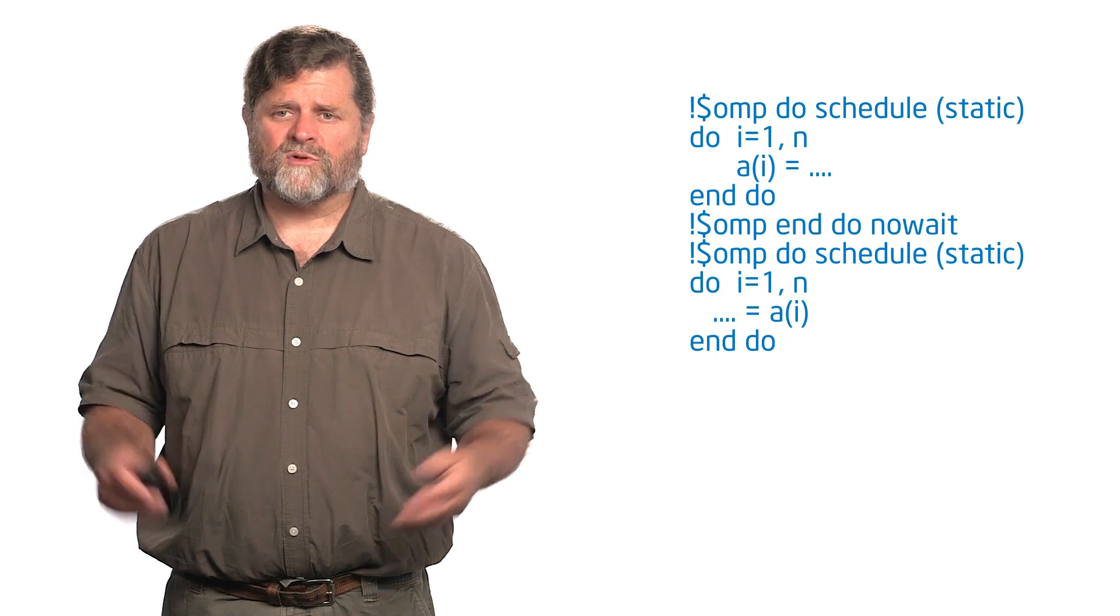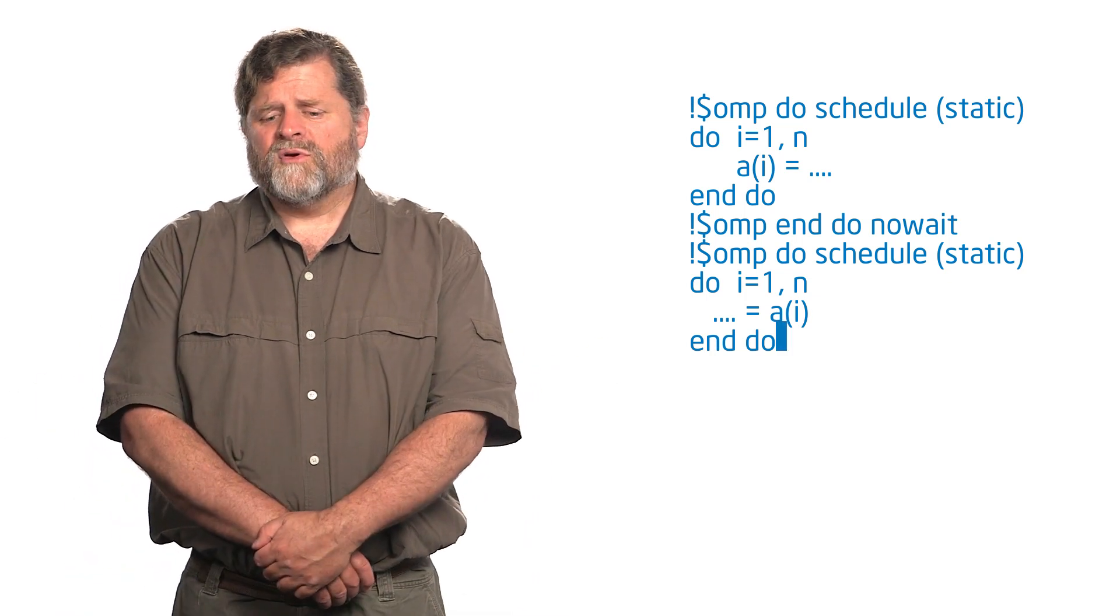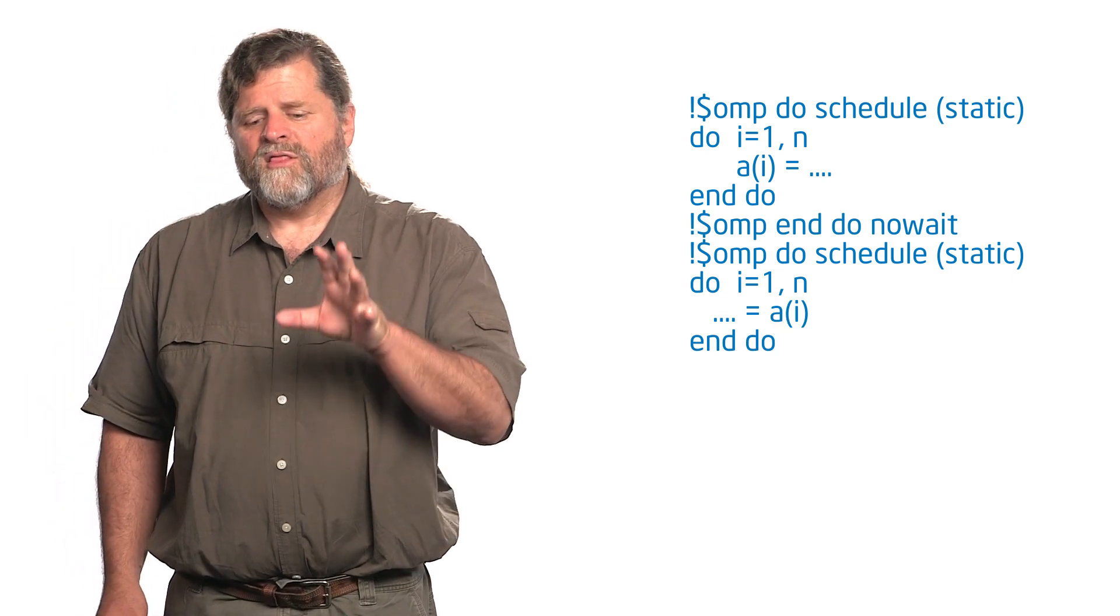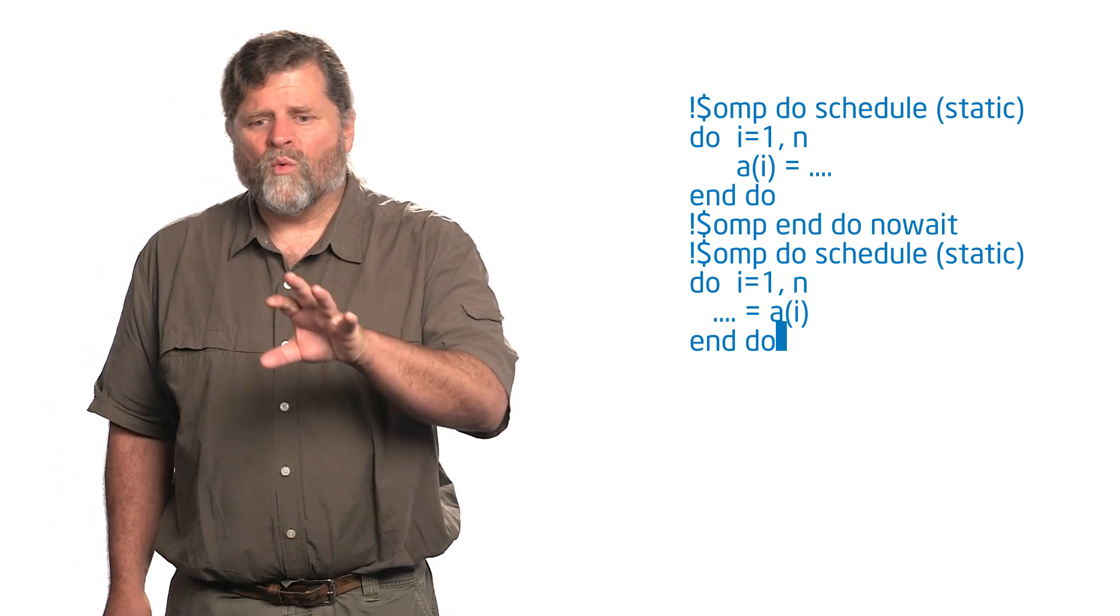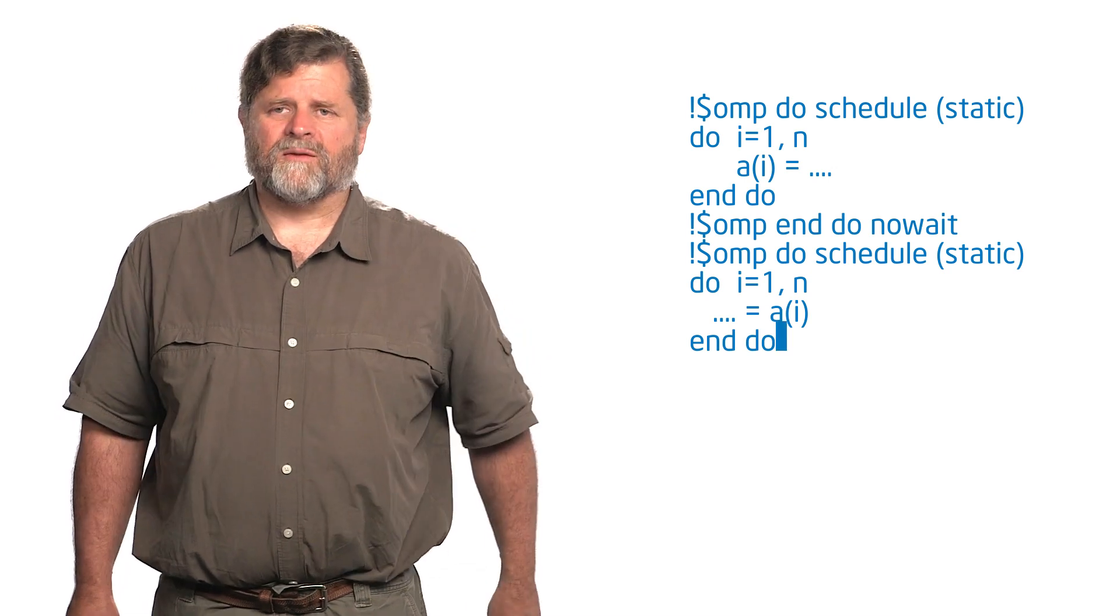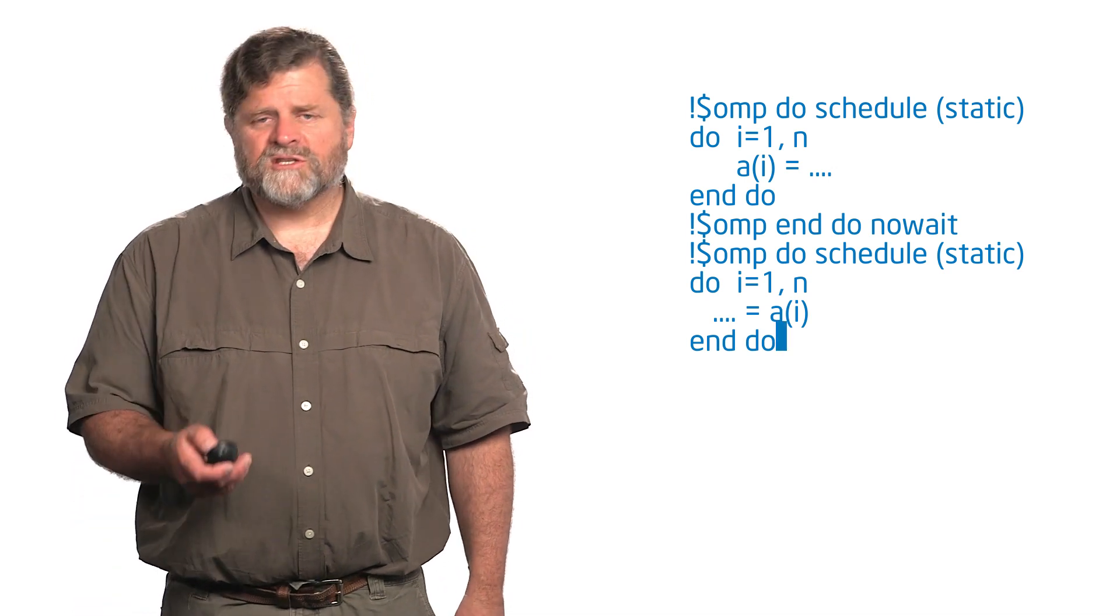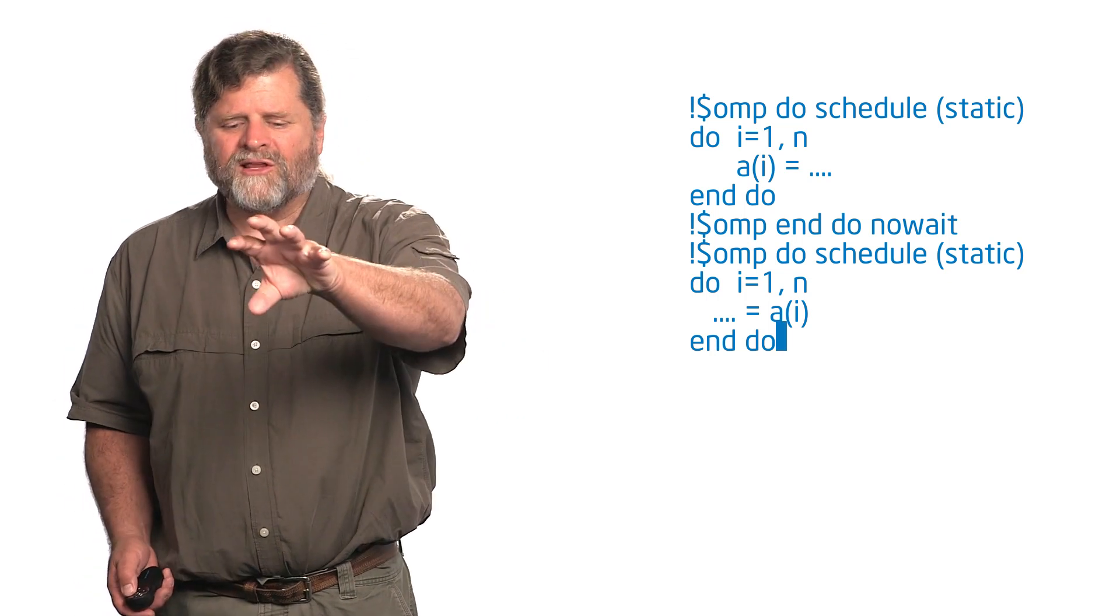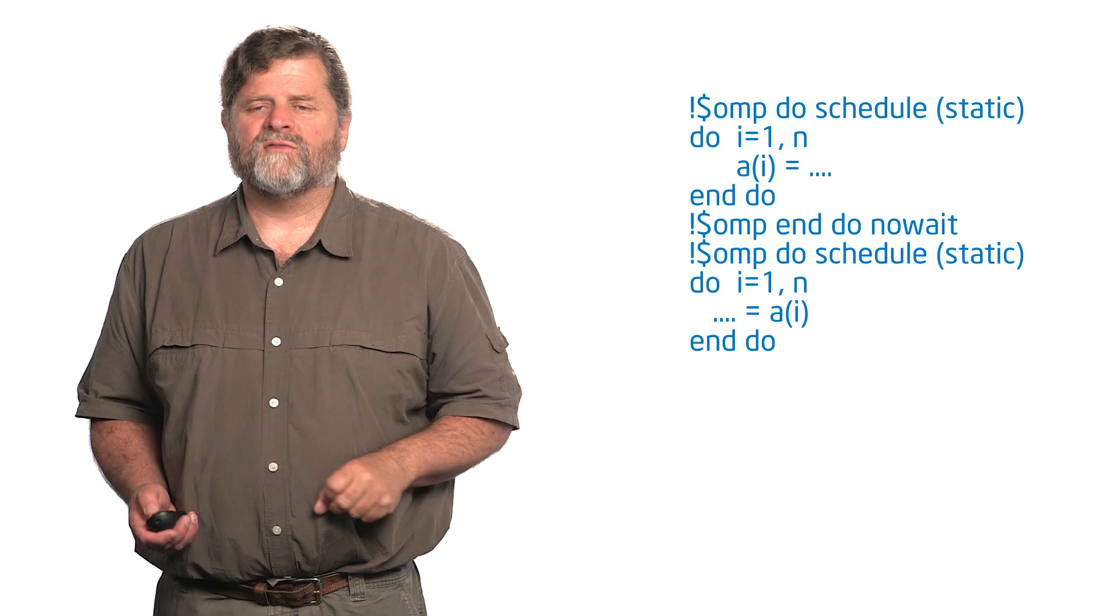And then I have the schedule clause static. And what the most recent versions of OpenMP do is they guarantee that this code works in that the way you map one schedule static onto another will be the same. So, that I can depend on the iterations from one loop being the same when I go to the following loop.